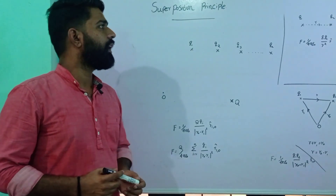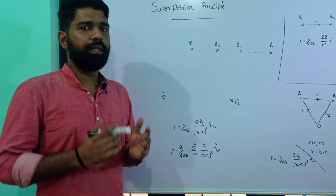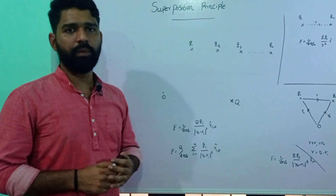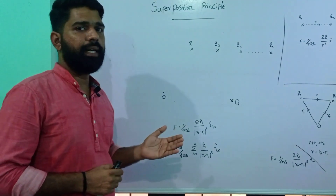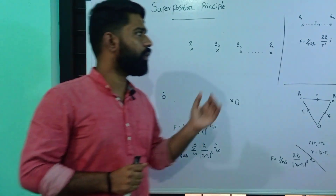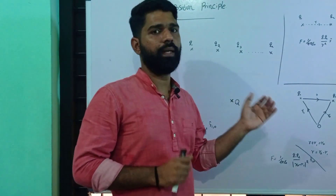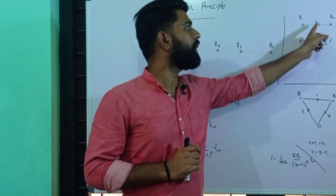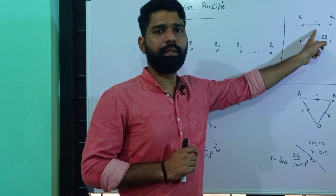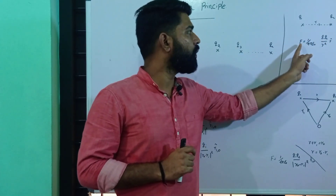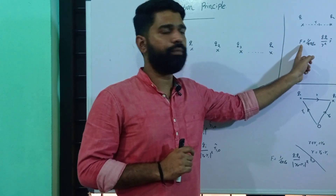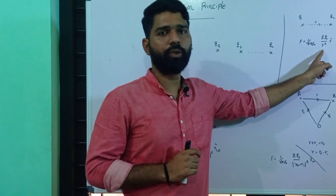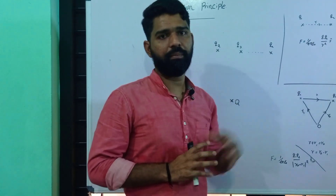Hi! We are going to discuss the superposition principle. In the first class, we will consider two charges Q1 and Q2, separated by a distance r. The Coulomb force F is equal to 1 by 4 pi epsilon naught, Q1 Q2 divided by r squared, r-cap.